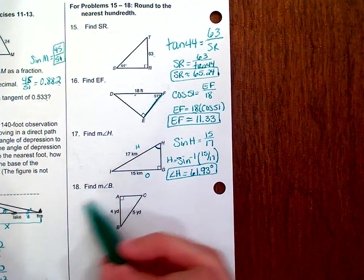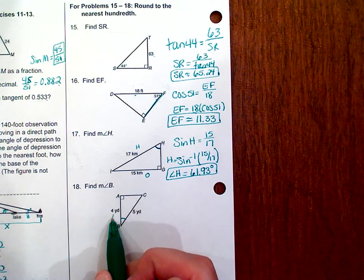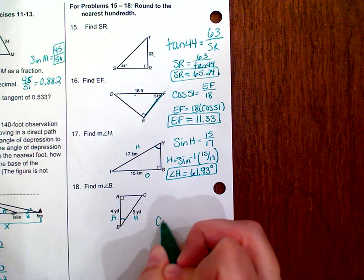Same thing on number 18, we're finding angle B. This time, this is your adjacent, this is your hypotenuse, so that's going to be cosine.